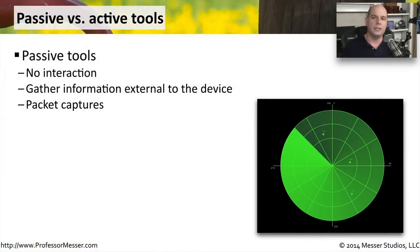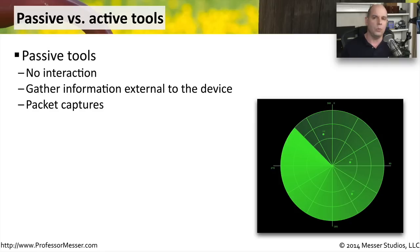One type of assessment tool is something that can gather information passively. These would be tools that don't interactively log into devices, and they're not trying to break into a device using a vulnerability. Instead, these passive devices try to gather as much information from the outside without directly interacting with those devices. Something like a packet capture is a good example of a passive assessment tool.